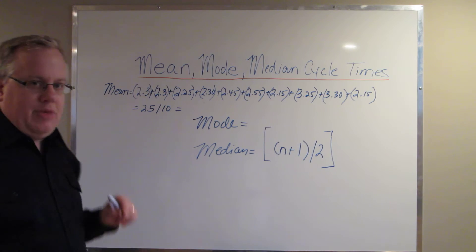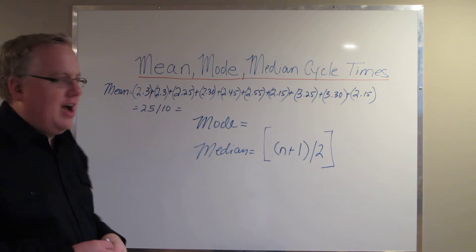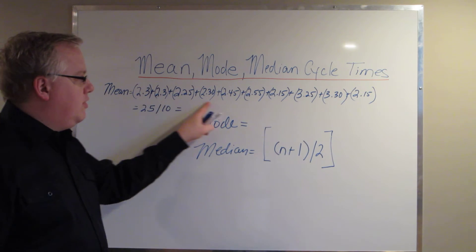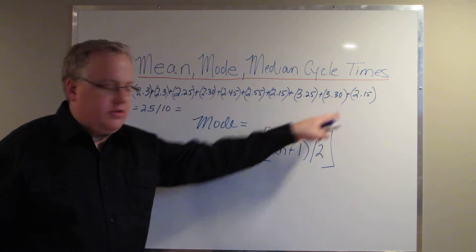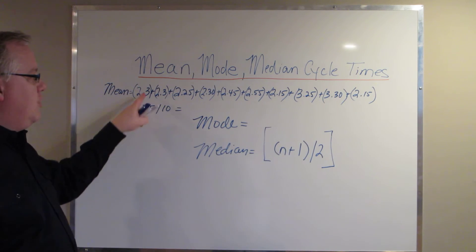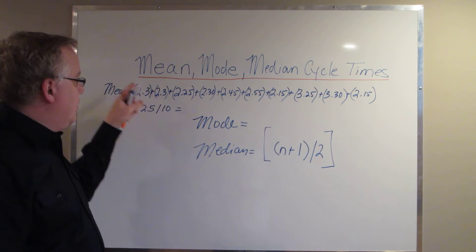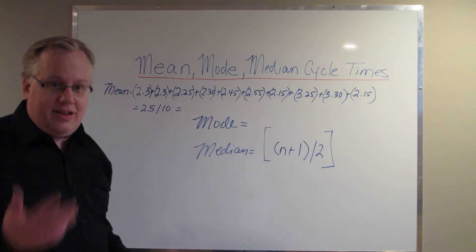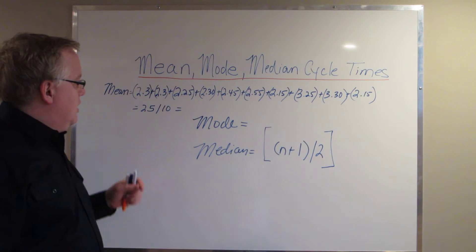So when you calculate mean, it's your standard calculation of average. You add up all of these individual operations and their cycle times. You come up with 25 and you divide it by the number of operations that were done. In this case, we took 10 cycle times. So it's 25 divided by 10.